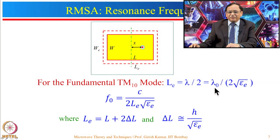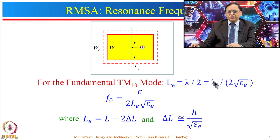We use epsilon_e (effective dielectric constant) rather than epsilon_r because most of the field is confined within the substrate material but part of the field goes into the air. By substituting lambda_0 = c/f_0, we can write the resonant frequency as f_0 = c divided by (2 × L_e × sqrt(epsilon_e)).